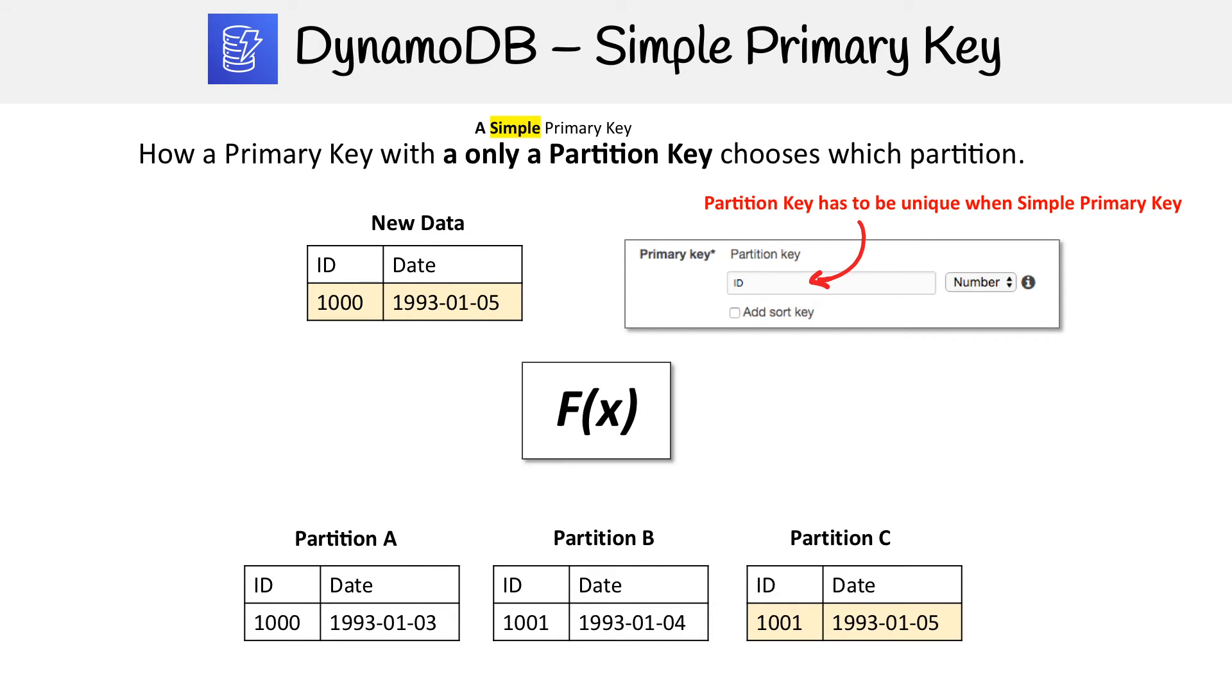The way this works is AWS has this thing called the DynamoDB internal hash function. We don't actually know how this works because it's a secret, but it's an algorithm that decides which partition to write data to.